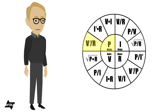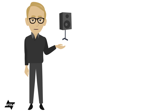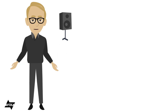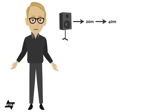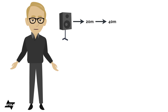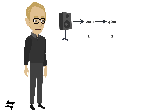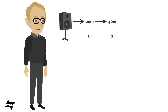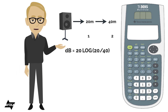Let's try a 20 log equation. Imagine a loudspeaker on a stick — you start at 20 meters away, then move to 40 meters away, doubling the distance from the source. How many fewer decibels would you expect at position 2 compared to position 1? Moving further away means a reduction — a negative number — so the smaller number goes first. Since this is distance, not power, we use the 20 log equation.